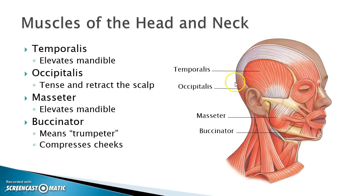The occipitalis — we can see a little bit of it here — covers the occipital bone, at the back of the head. The masseter muscle goes from the zygomatic arch down to the mandible; this also elevates the mandible. The masseter is one of the muscles of mastication, which is chewing. When you open and close your mouth to chew, you're using your masseter muscle.